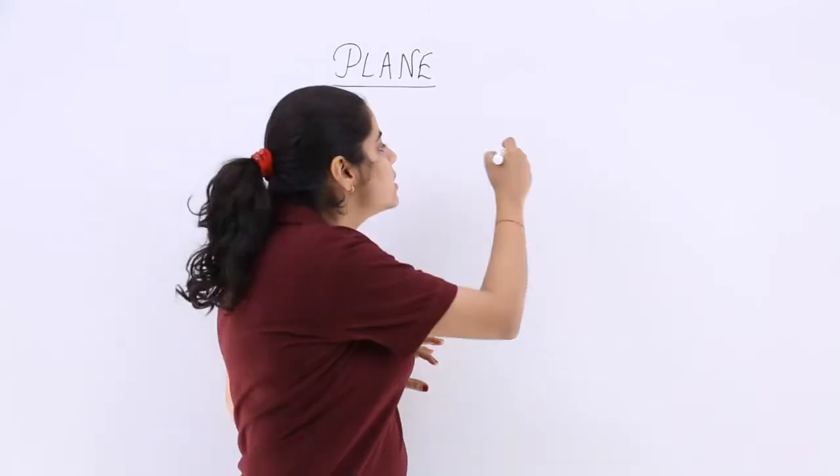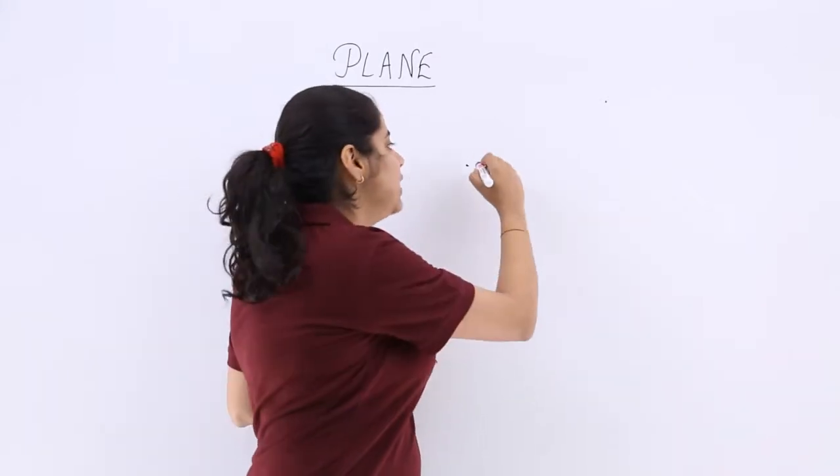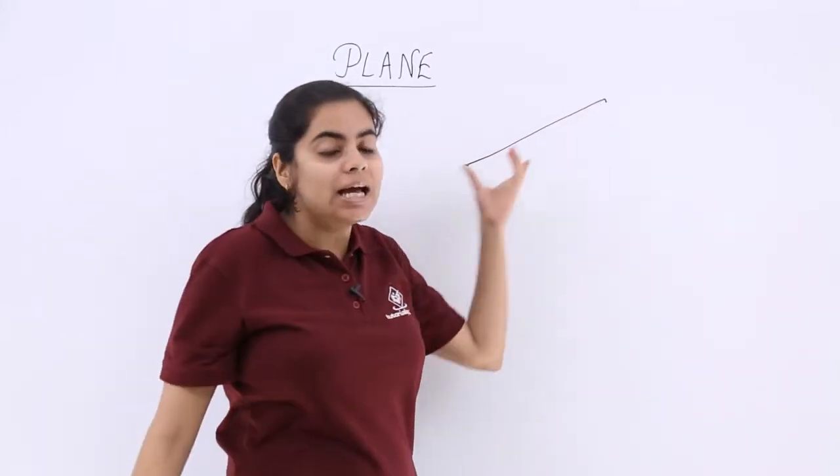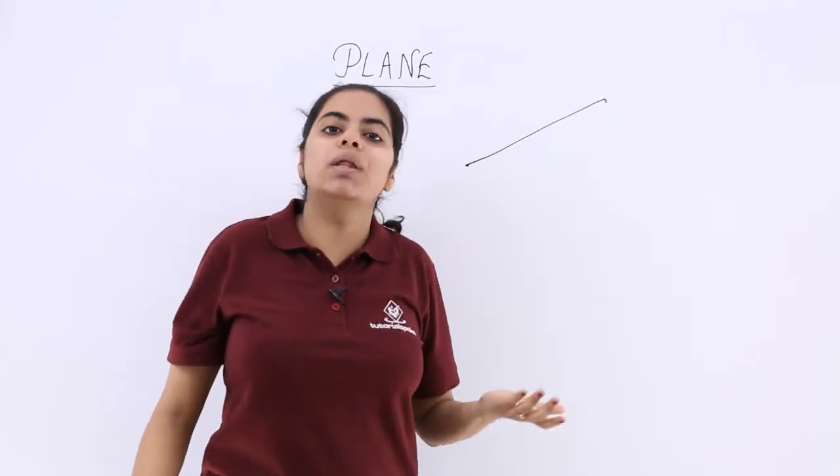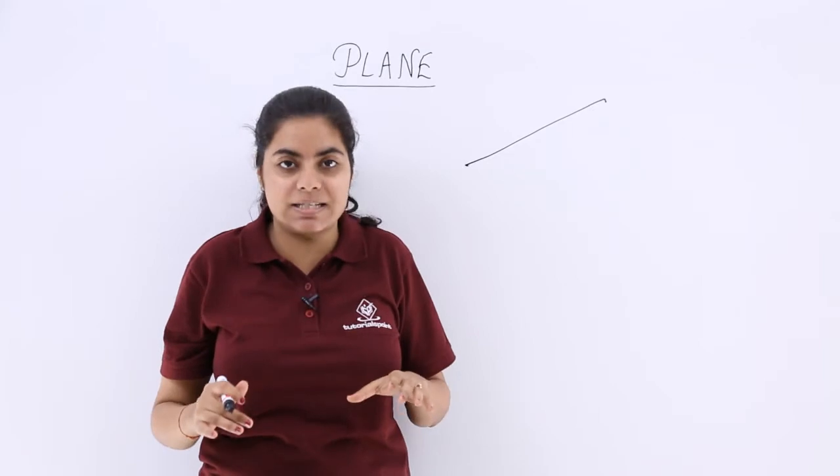Why is it a plane? Because if I take any two points on this plane and I join it with the line segment, the line segment lies completely on the plane. So that is the definition of a plane and that is the understanding.